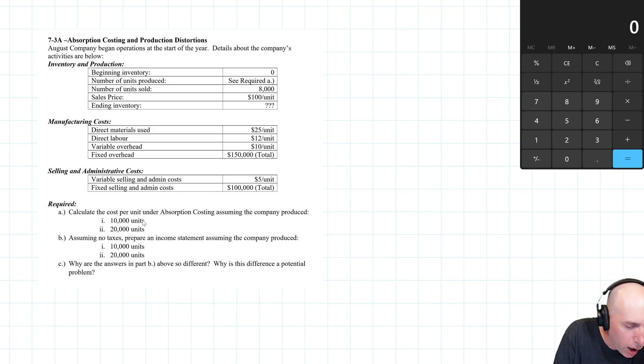August Company began operations at the start of the year. Details about the company's activities are below. We've got no beginning inventory, it's a new company. Number of units produced: well, under the first scenario will be 10,000, we'll look at when they produce 20,000. Number of units sold: only 8,000. So if you make 10,000 and sell 8,000, you're pretty happy. You make 20,000 and sell 8,000, you sold less than half what you made, you're not so happy.